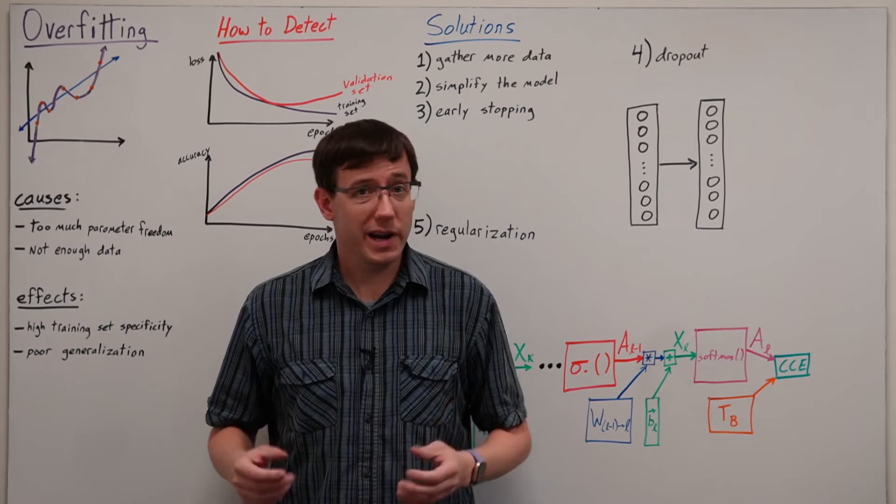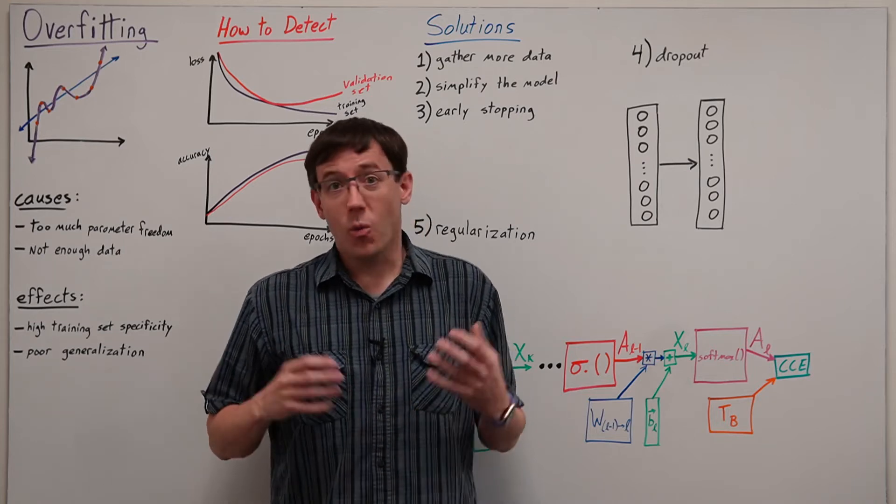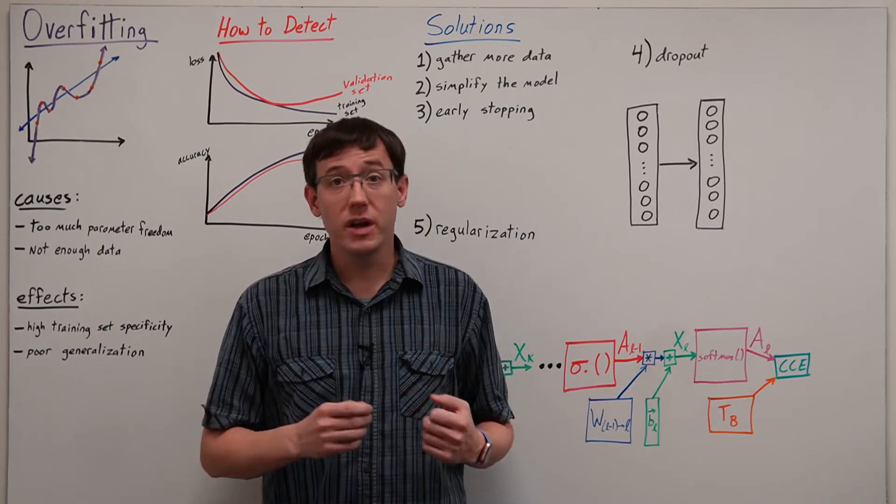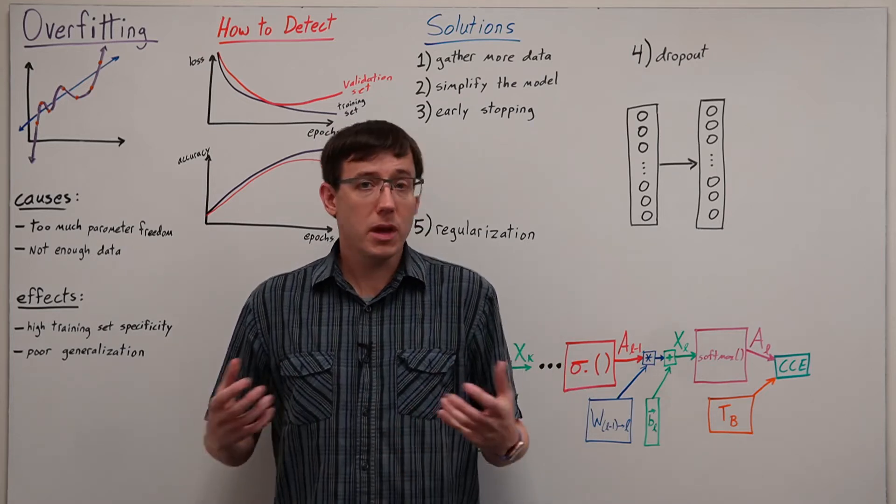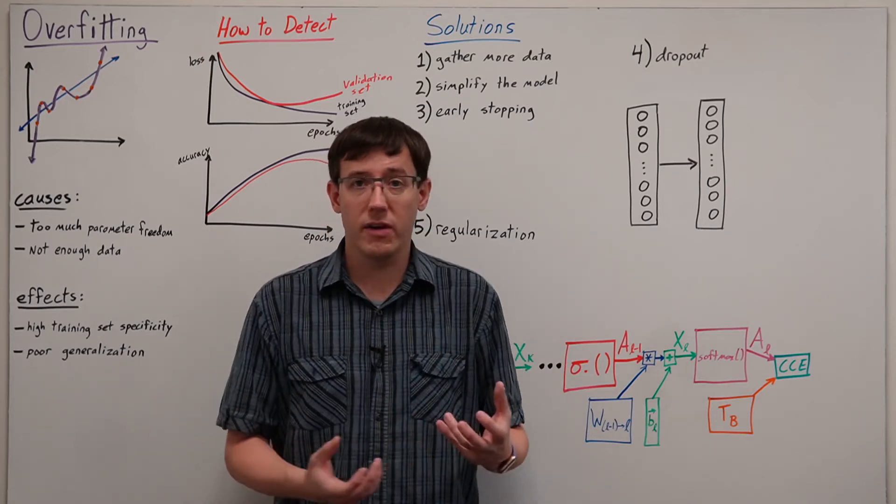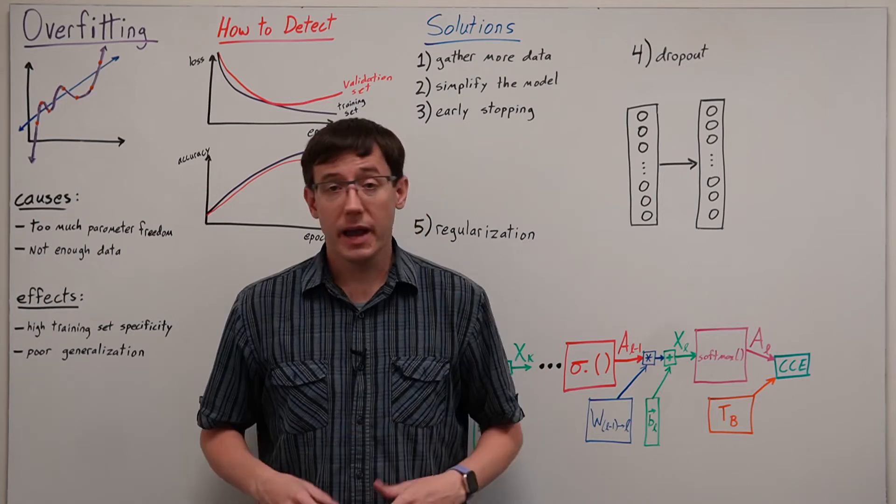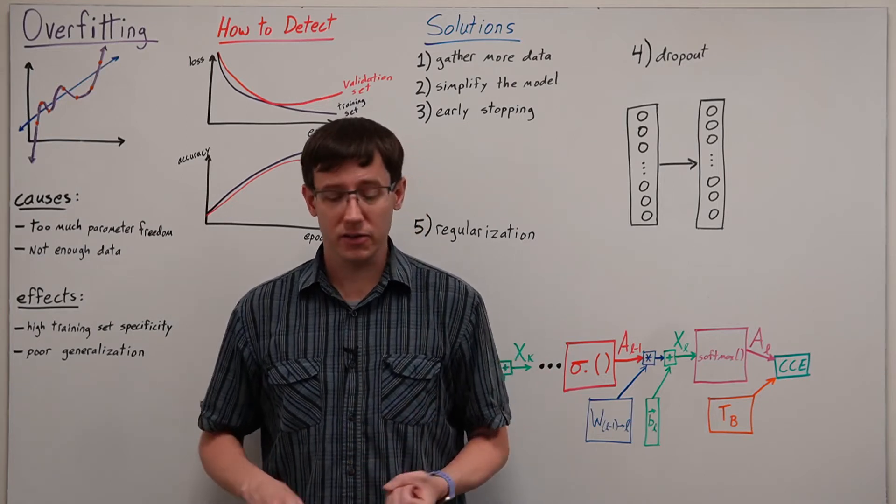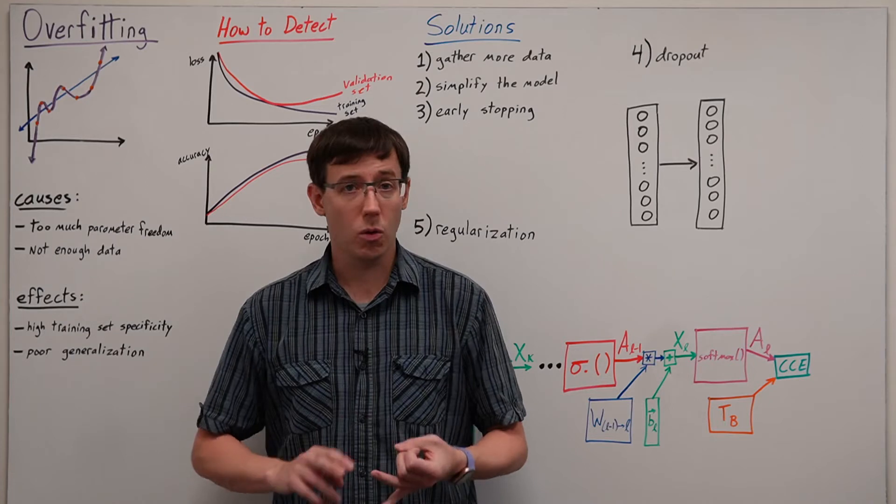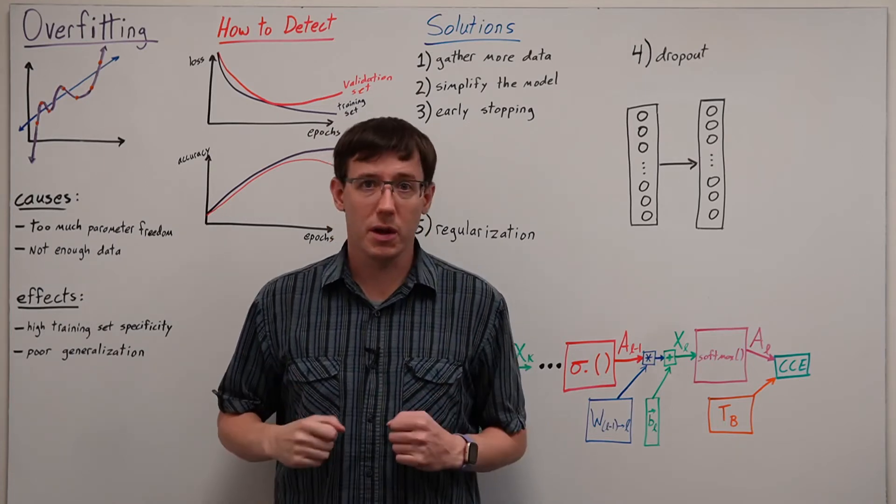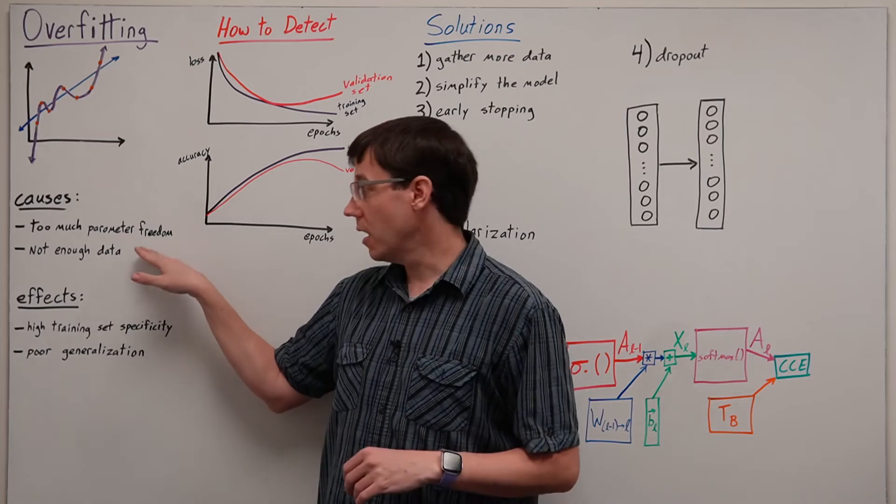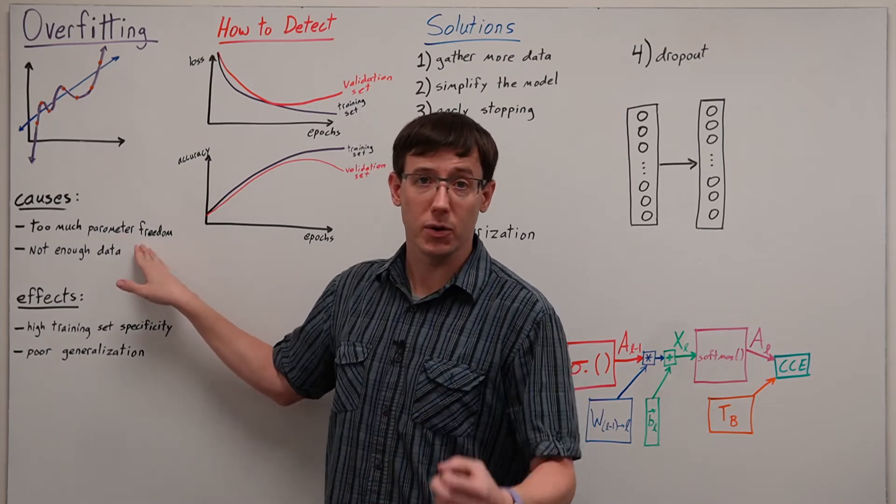But unfortunately, when we're training our own neural networks, we may not have access to data or compute at that kind of scale. And so there may be some things we can do to take advantage of additional data, and we'll talk in the future about techniques like data augmentation or transfer learning that can help with this, but we will also sometimes need to think about combating the other cause of too much parameter freedom.